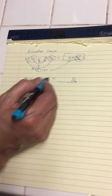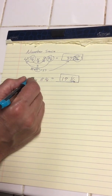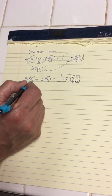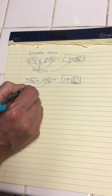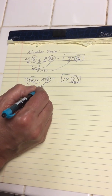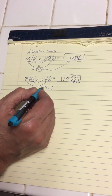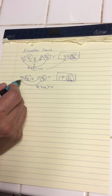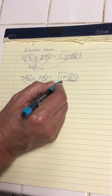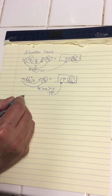Three times five is 15, plus the two is 17. Reviewing the steps: one-fourth times one-fourth gives one-sixteenth. Then I factor out the one-fourth from one-fourth of five plus one-fourth of three — that's three plus five equals eight, and one-fourth of eight is two. Carry the two, then three times five is 15, plus two gives 17. The answer is 17 and one-sixteenth.